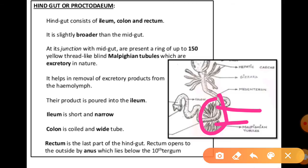The colon is a white coiled tube which does not contain spines, while the rectum is the last part of the hindgut. The Malpighian tubules play a very important role in excretion — they act like excretory organs in the cockroach, helping in the removal of excretory products from the hemolymph.